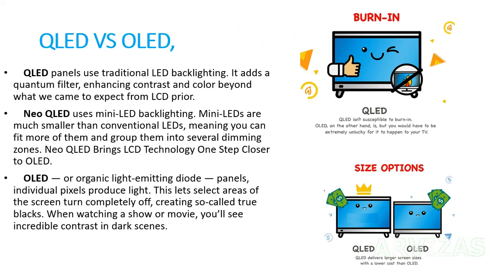QLED uses traditional LED backlighting with a quantum dot layer that enhances color. Neo QLED uses mini-LED backlighting. OLED stands for Organic Light Emitting Diode — individual pixels produce their own light and can switch completely off, enabling perfect blacks.